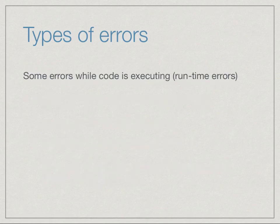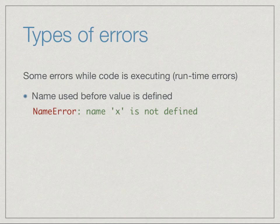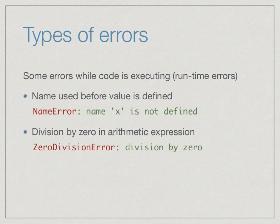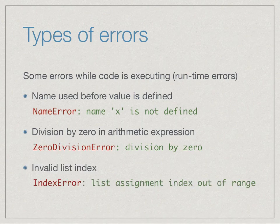These are what are called runtime errors — errors that happen while the program is running. They come with some diagnostic information. For instance, if we use a name whose value is undefined, we get a message from Python that the name is not defined, and a code at the beginning saying this is a NameError. Similarly, if we have an arithmetic expression where we divide by zero, we will get a ZeroDivisionError. And if we try to index a list outside its range, we get an IndexError.